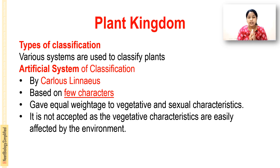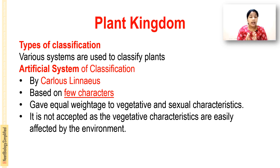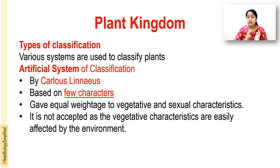In the artificial system of classification, equal weight is given to vegetative as well as sexual characteristics. However, this system is not accepted because vegetative characteristics are easily affected by the environment — when the environment changes, these vegetative characteristics change. So this system of classification is not accepted.